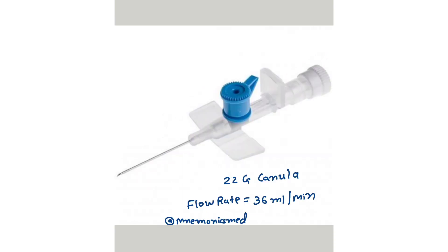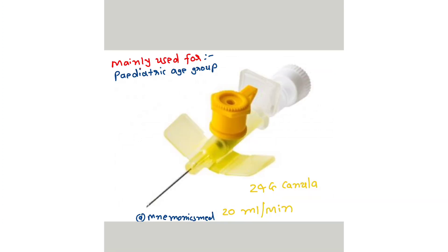This is the 22 gauge cannula — its flow rate is 36 ml per minute. It is a blue colored cannula.